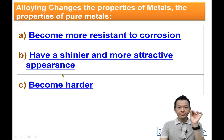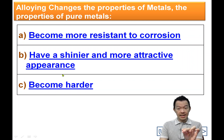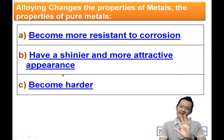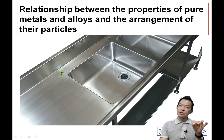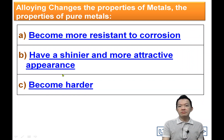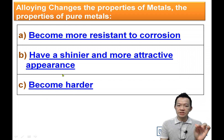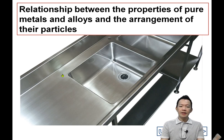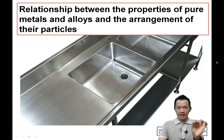So this is what we call alloy and alloying. Why does adding something into a pure metal suddenly make it better — better appearance, harder, stronger? That is what we will explain in the next video. Follow me in the next video.